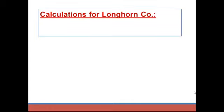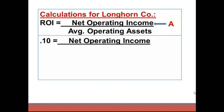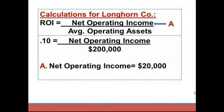We're going to use return on investment and residual income calculations to solve for those variables, since those are the two techniques used for evaluating investment center managers. Remember, ROI can be calculated as net operating income divided by average operating assets. We're trying to solve for net operating income. The actual ROI was 10% and average operating assets were $200,000, so we can compute net operating income to be $20,000. That's the answer to letter A.